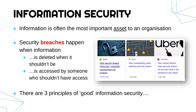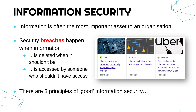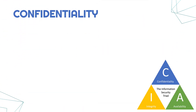There are three fairly well-known principles of good information security which we're going to go through one by one. Often these three — confidentiality, integrity and availability — are shortened to the CIA triad, a triad just being three things. So if it helps you remember these principles, you can think of the CIA triad.